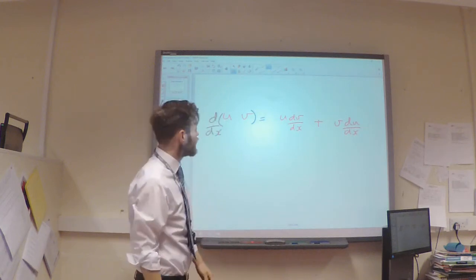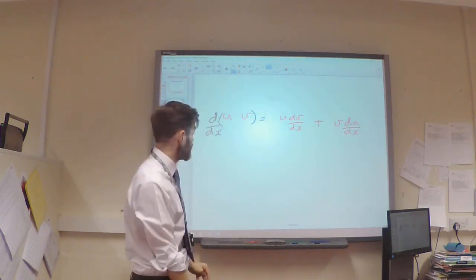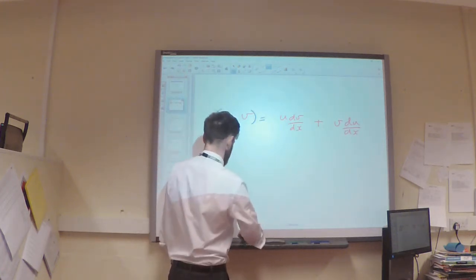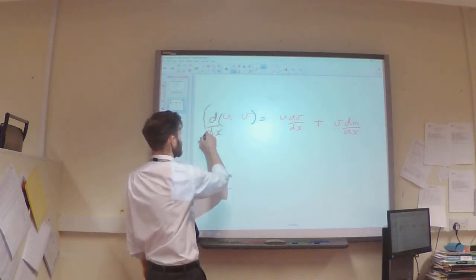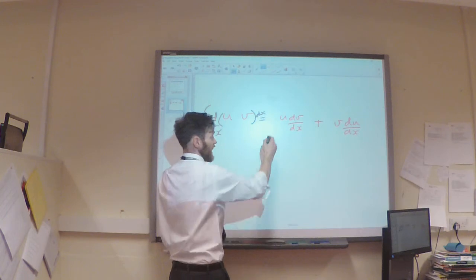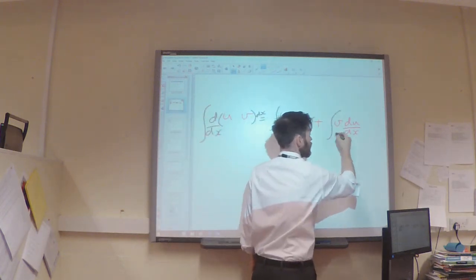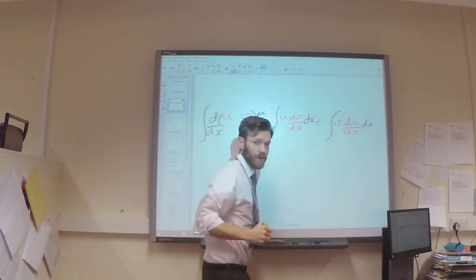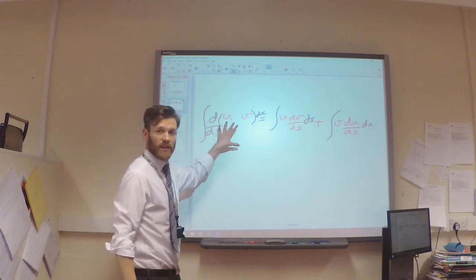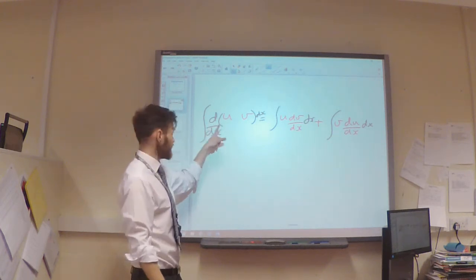So that's the product rule. Now what I'm going to do is integrate all the way through. I'm going to integrate both sides - the left hand side and the right hand side - all of those with respect to x. So integrating each part here with respect to x.